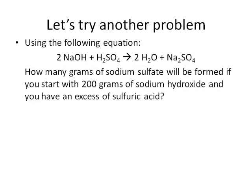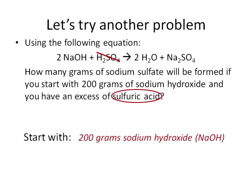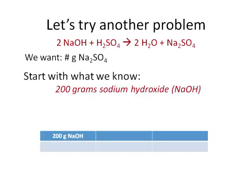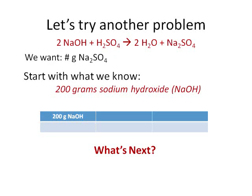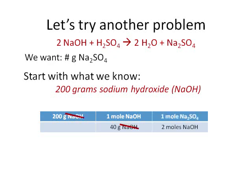Let's try another. Take a little time to read this problem. We'll start with the sodium hydroxide, because the excess means we can cross that one out — it doesn't matter to our calculations. To start with what we know: 200 grams of sodium hydroxide. Next, we'll have to calculate the molar mass of sodium hydroxide, then find the molar ratio between sodium hydroxide and sodium sulfate.